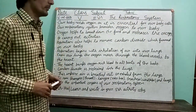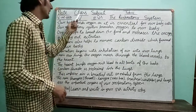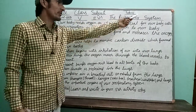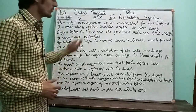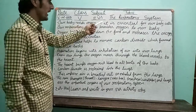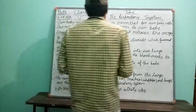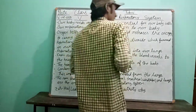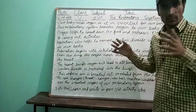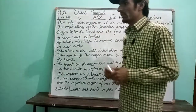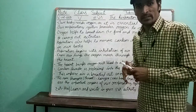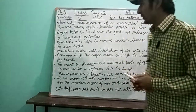Hello friends, I am back to continue the syllabus — Class 5, subject: Areas, topic: The Respiratory System. Today we are going to talk about the respiratory system. Our body needs oxygen as it is essential for our body cells. Whenever we take a breath, we get air inside our body, and from this air, oxygen is the portion which our body uses for its activities. So it is very essential for our body.